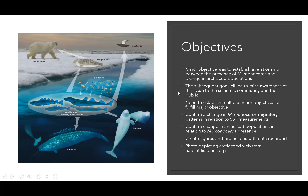My objectives: The major objective was to establish a relationship between M. monoceros and arctic cod populations. To do that, we first have to establish that there is a change in migratory patterns due to sea surface temperatures, because mitigating SST changes could help the problem. A subsequent goal is to raise awareness to the scientific community to continue research, and to the public to press for change — including reducing personal carbon footprints. After that, we could create figures and projections showing current trends and future impacts on arctic cod populations.